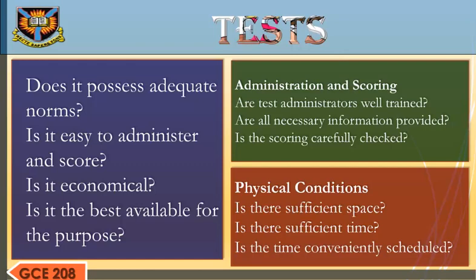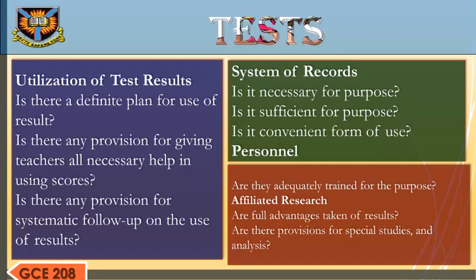Administration and Scoring: Are test administrators well trained? Are all necessary information provided? Is the scoring carefully checked? Physical Conditions: Is there sufficient space? Is there sufficient time? Is the time conveniently scheduled? Utilization of Test Results: Is there a definite plan for use of results? Is there any provision for giving teachers all necessary help in using scores? Is there any provision for systematic follow-up on the use of results?